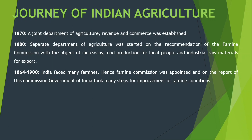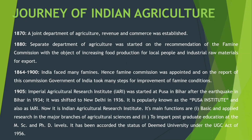1864 to 1900 में India faced many famines. Famine commission was appointed and on the report of this commission, government of India took many steps for improvement of famine conditions. 1864 से लेकर 1900 तक India ने बहुत सारे famines face किए — lack of food over a long period of time जिससे की जादा से जादा लोगों की death भी हो रही थी। इसलिए government ने बहुत सारे steps लिए जिससे की famine condition improve हो सके।